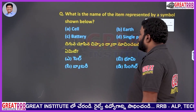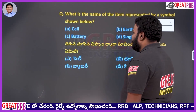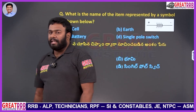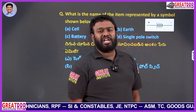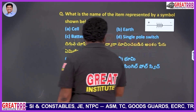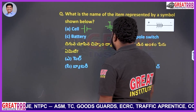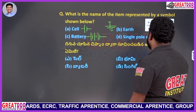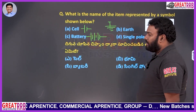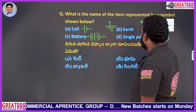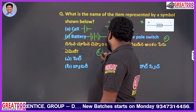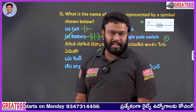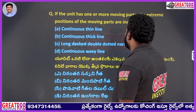What is the name of the item represented by the symbol shown? Options: A) cell, B) earth, C) battery, D) single pole switch. A cell symbol is a single cell; earthing has its own symbol; a battery is a series of cells connected together; a single pole switch has a different switch symbol. So option C, battery, is the right answer.